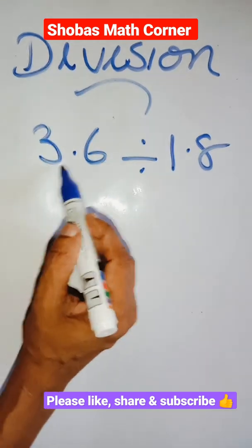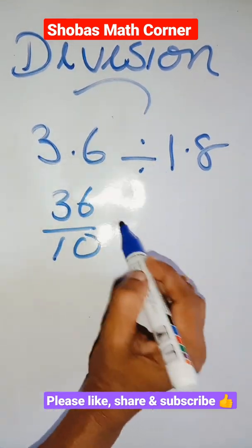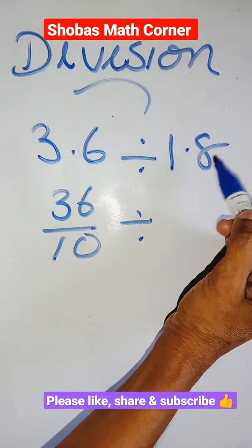Okay, 3.6 after decimal one digit. So I am writing this as 36 by 10, then divided by 1.8.